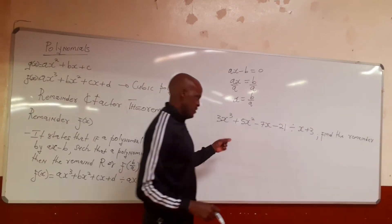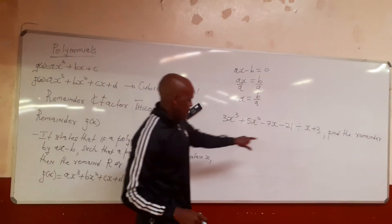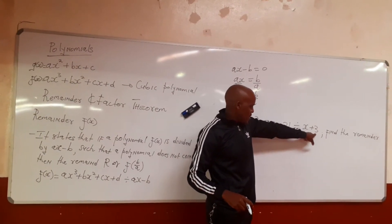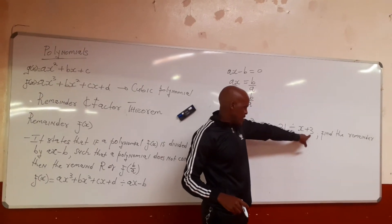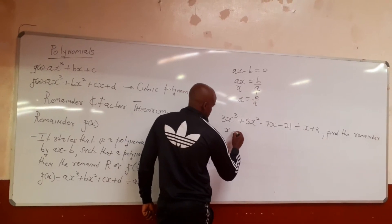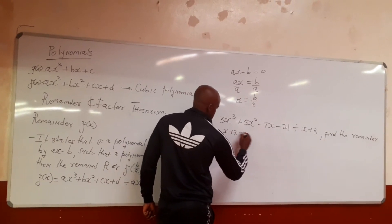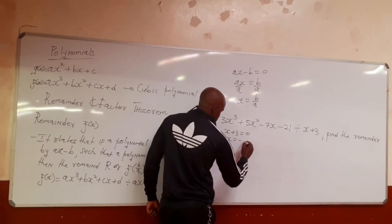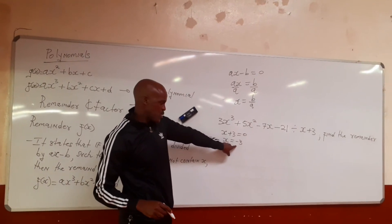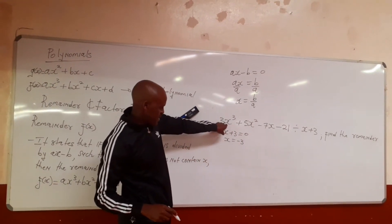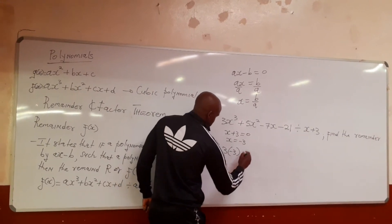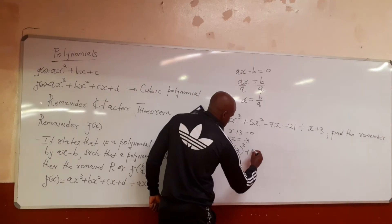Using the Remainder Theorem, this represents ax plus p or ax minus p, so you simply solve for x. It's x plus 3 equals 0, therefore x equals negative 3. In other words, in the place of x you are going to put negative 3 wherever there is x.